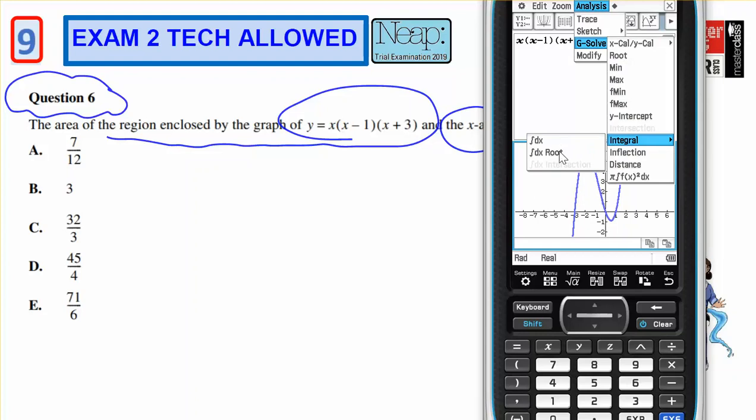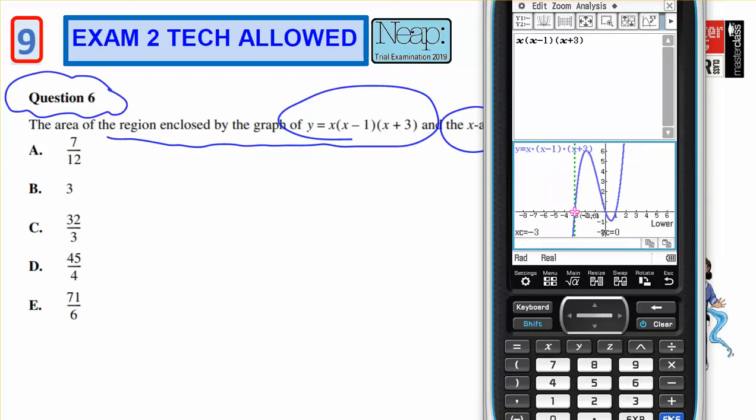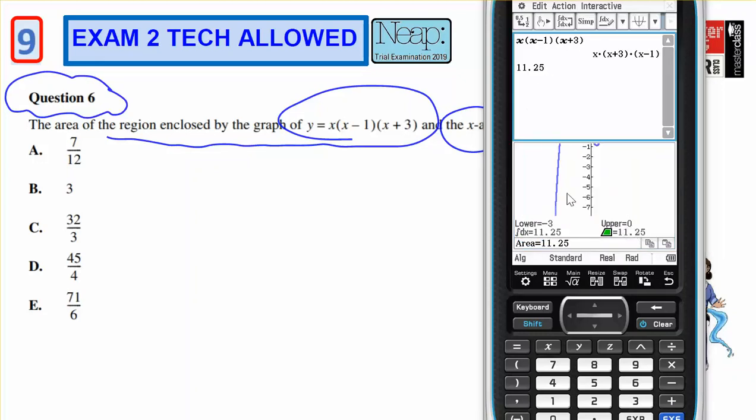Integral root, so I'll go from the x-intercepts. I'll accept that one. Come across, I'll accept that one. And that area is 11.25, so I might grab that. Okay, there it is, 11.25.